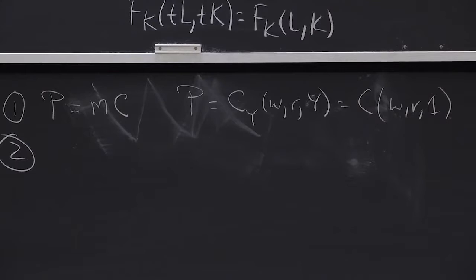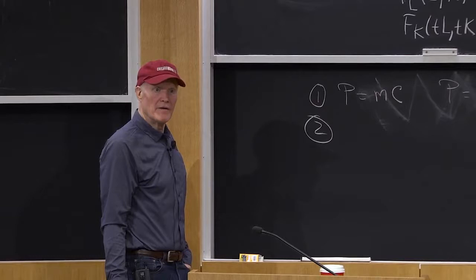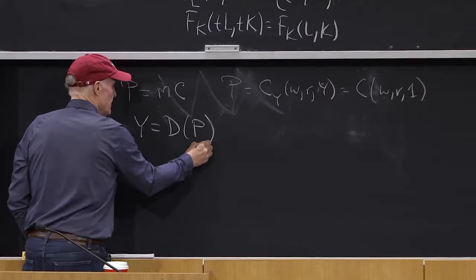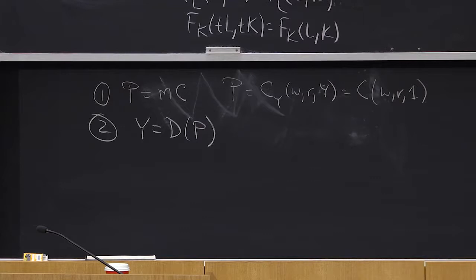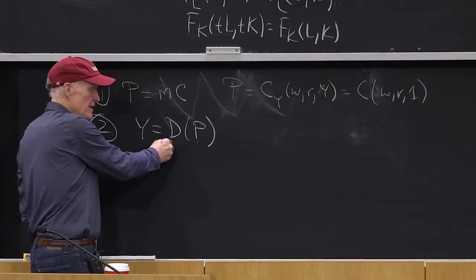What else? What equilibrium conditions do we have? Market clearing, which would be Y equals D of P. Right? That is, the amount that we're producing has to be equal to the amount that consumers demand for this industry at that price. That is, tell me what the equilibrium price is. That determines demand in here.